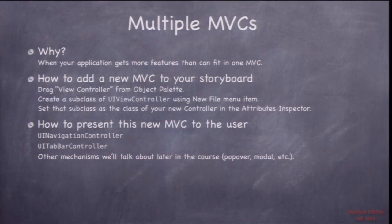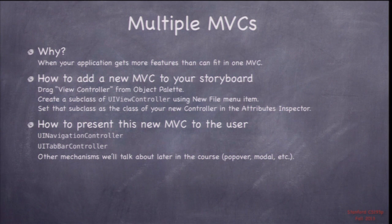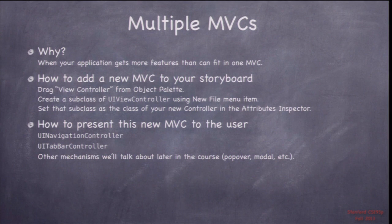So let's talk about multiple MVCs. Why do we want them? Obviously to put more stuff in our app. How do we do it? You go to the object palette, drag out a UIViewController, then create your subclass of UIViewController, and set its class in the identity inspector. That's how you create a new MVC for your app. Once added, you can put buttons, labels, and other UI in its view, hook up outlets and actions, and create a second, third, or even hundreds of MVCs. A large app might have a hundred or more.